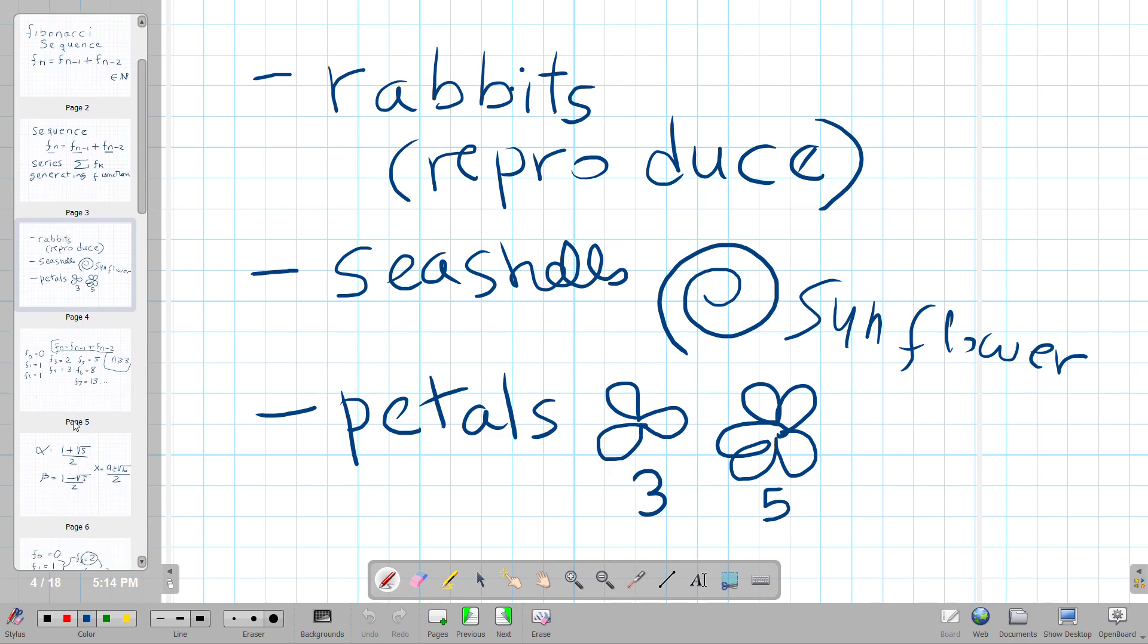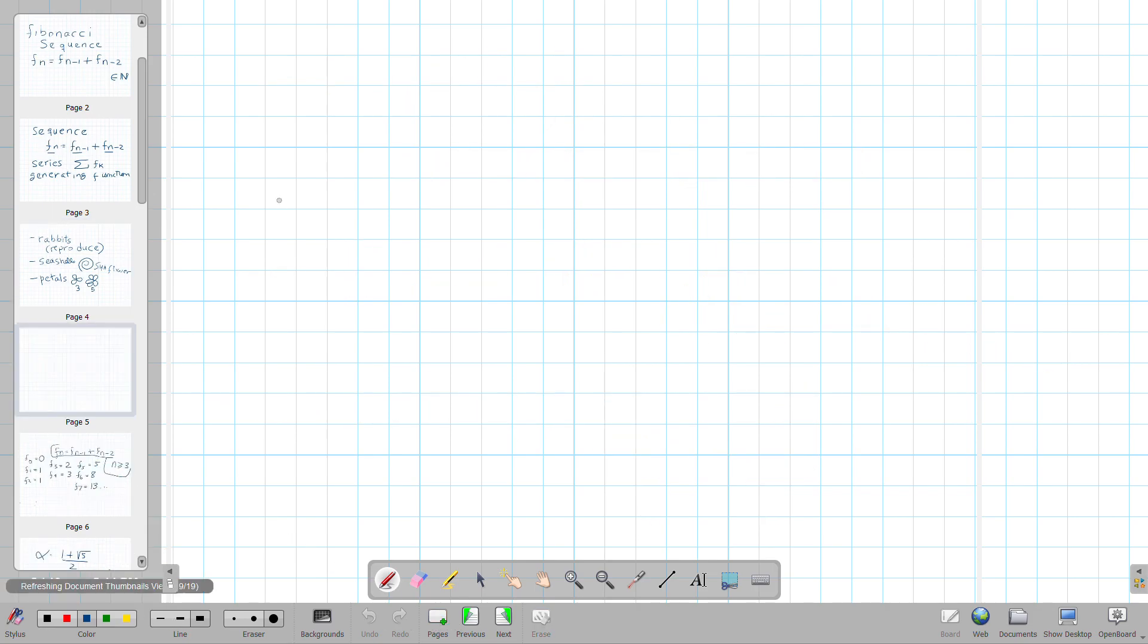So for example, if we talk about a few of the terms of the sequence, typically F of zero is zero. Most of the time nobody talks about this term. So really, when you see the sequence, people start it off at one. So effectively these are like the two rabbits.